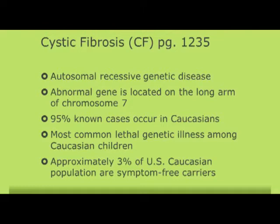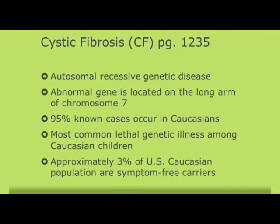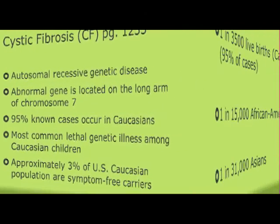Now let's move to cystic fibrosis, which starts on page 1235. Cystic fibrosis is an inherited disease - an autosomal recessive trait. The affected child has inherited the defective gene from both parents. One in four children will be affected if both parents carry the gene. It is 95% prevalent in Caucasians compared to other groups, and it is considered a lethal genetic illness.